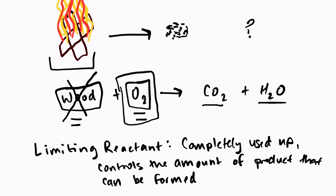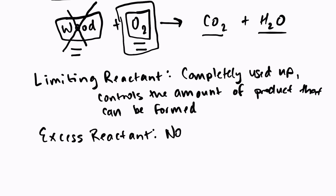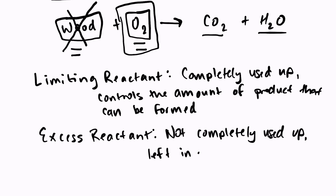Oxygen in this case would be known as the excess reactant. The excess reactant is the reactant that is not completely used up — there's some left over, left in excess, at the end of the reaction. So again in this example, wood is the limiting reactant — it is burned up and no longer available — and oxygen is left behind in excess.